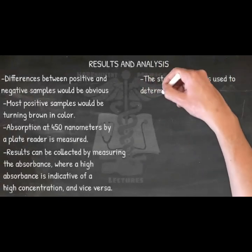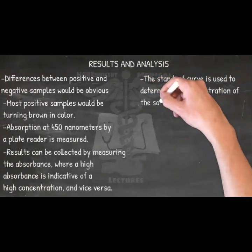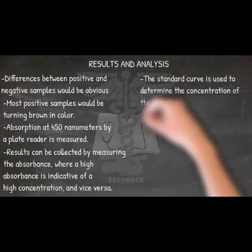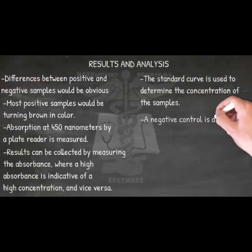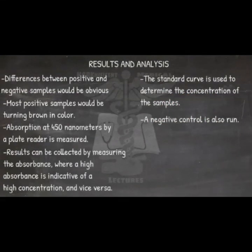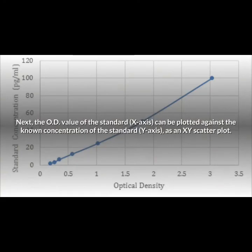The standard curve is used to determine the concentration of the samples. A negative control is also run, which contains no standard. To accurately determine the true absorbance of any well, the background must be subtracted, giving corrected absorbance values. The OD value of the standard can be plotted on the X-axis against the known concentration of the standard on the Y-axis as an XY scatter plot.